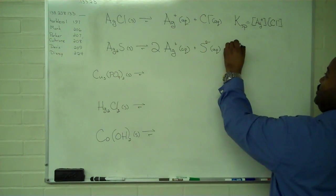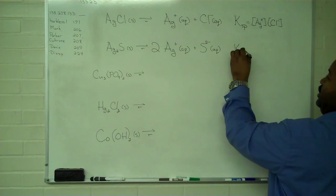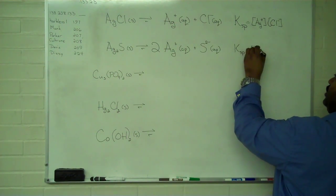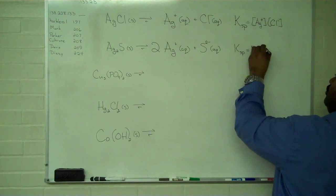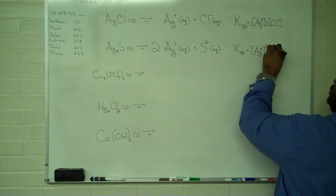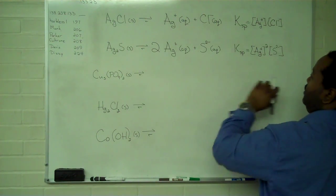Because this is an equilibrium constant with a solid as reactant, I only have to worry about the product of my two product species. So we square that because of the two on the stoichiometry, and this remains to the first power.